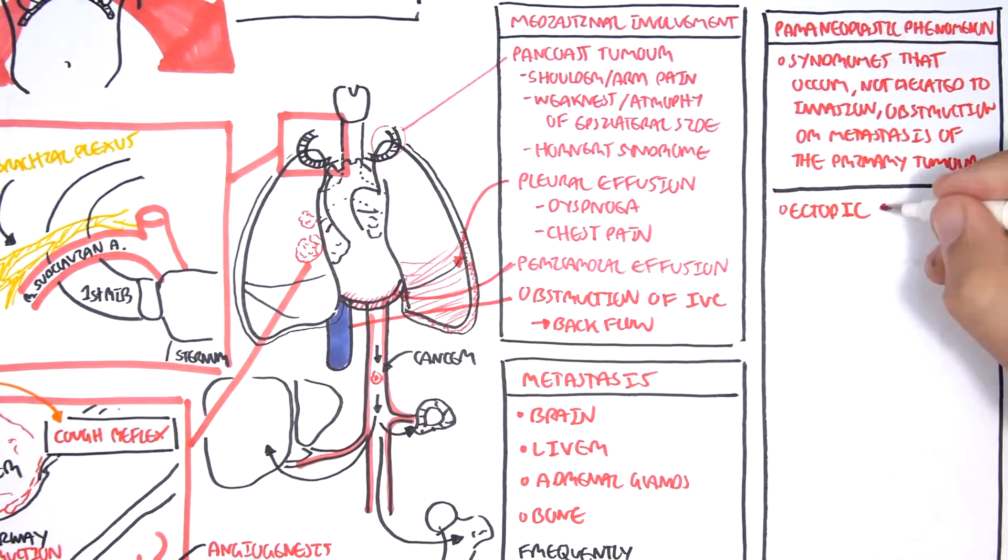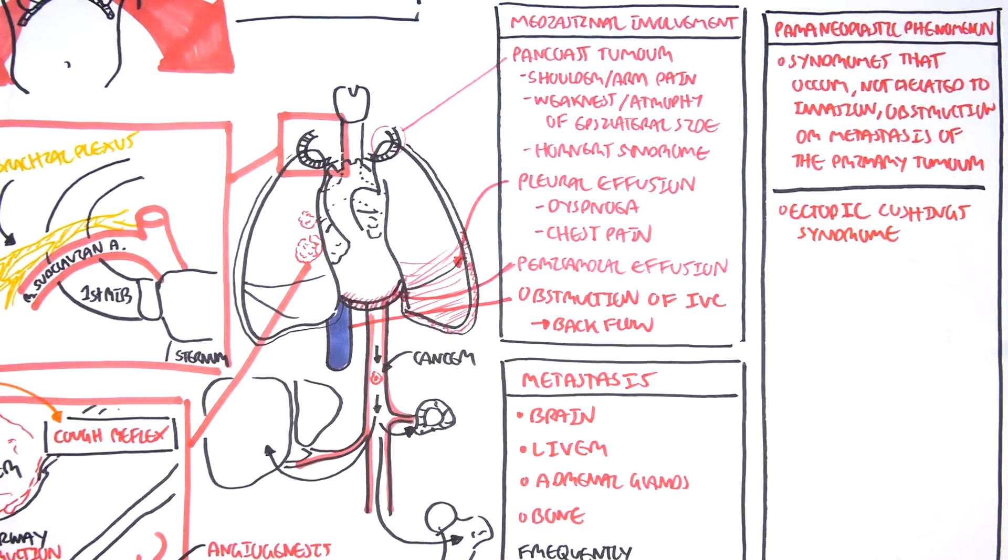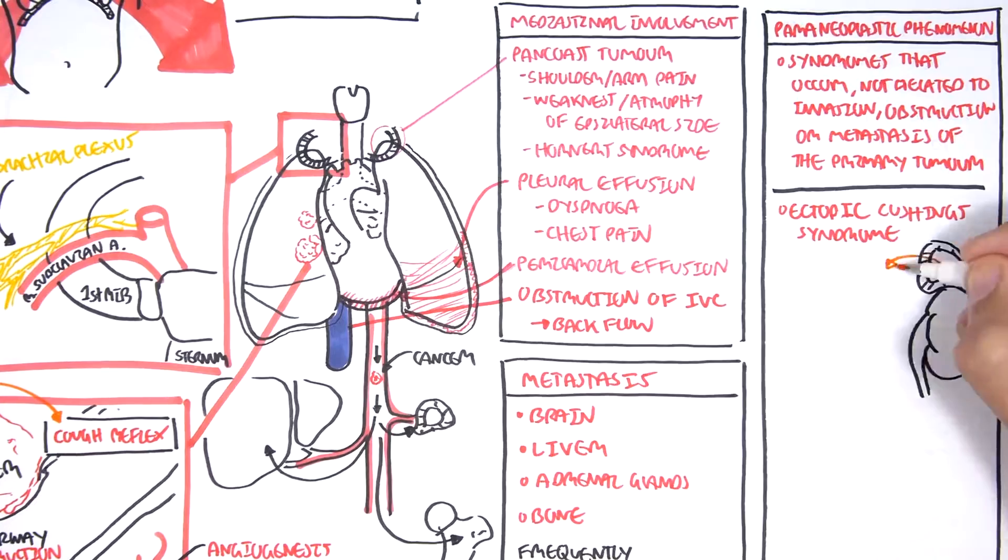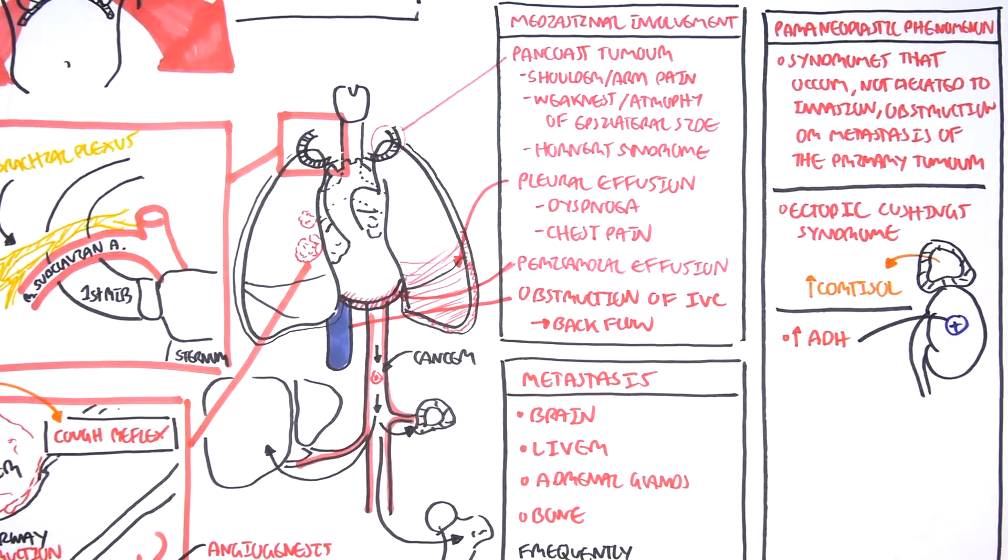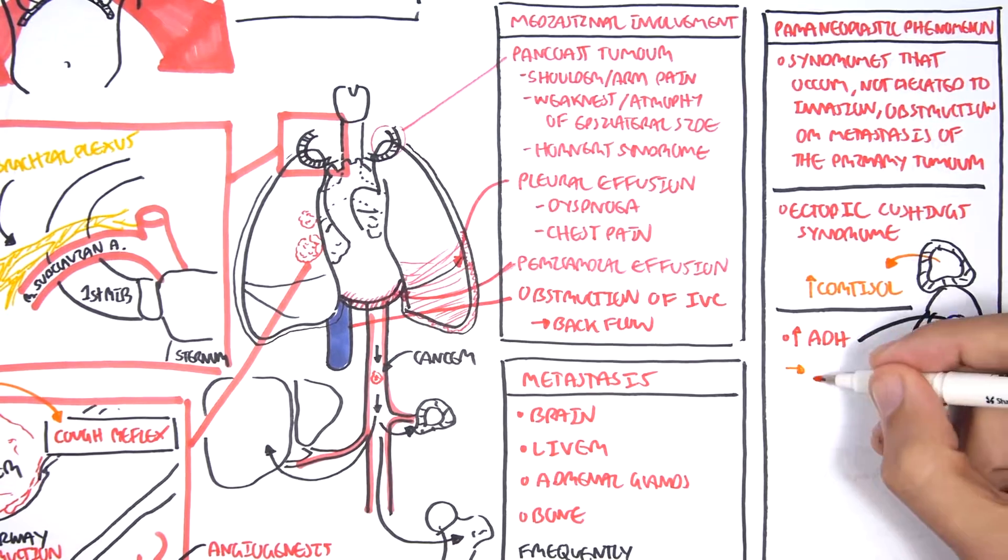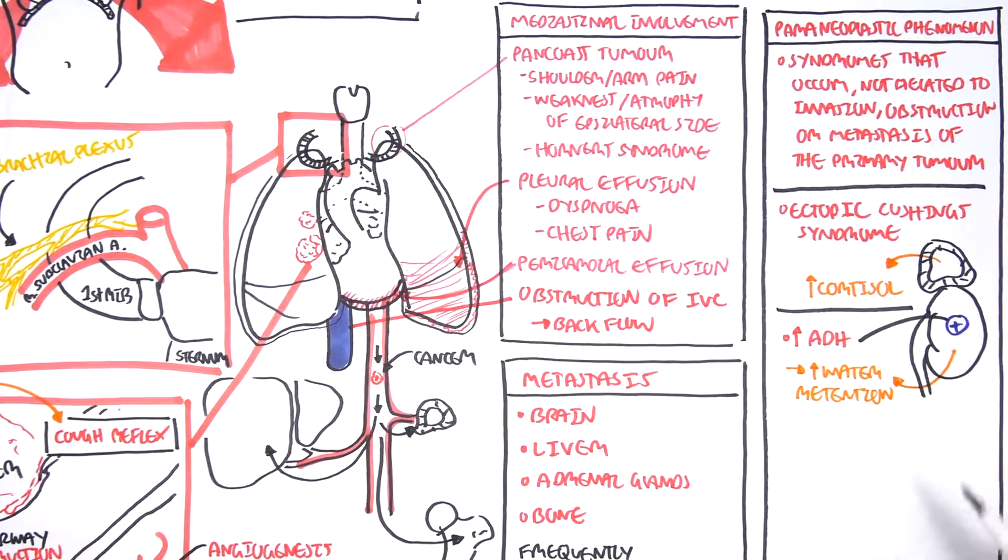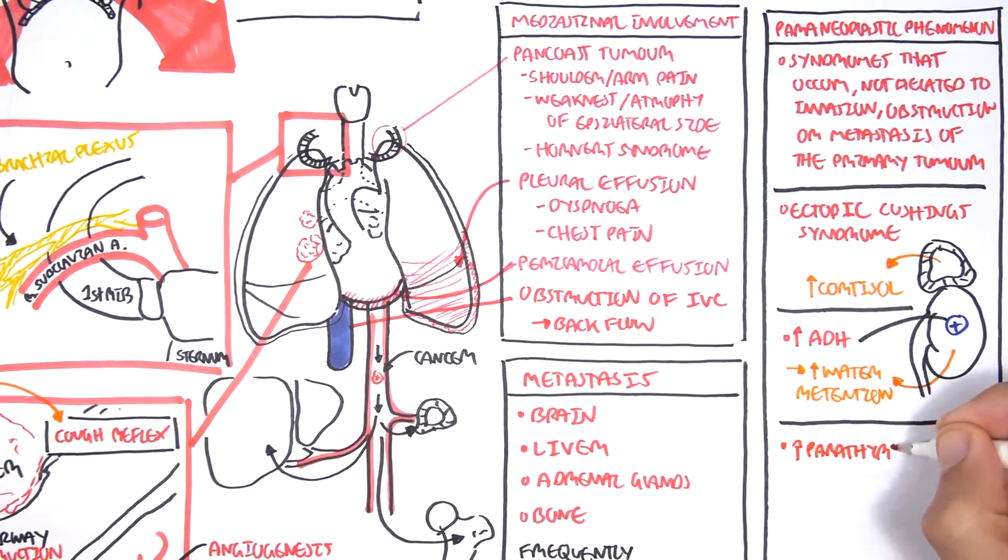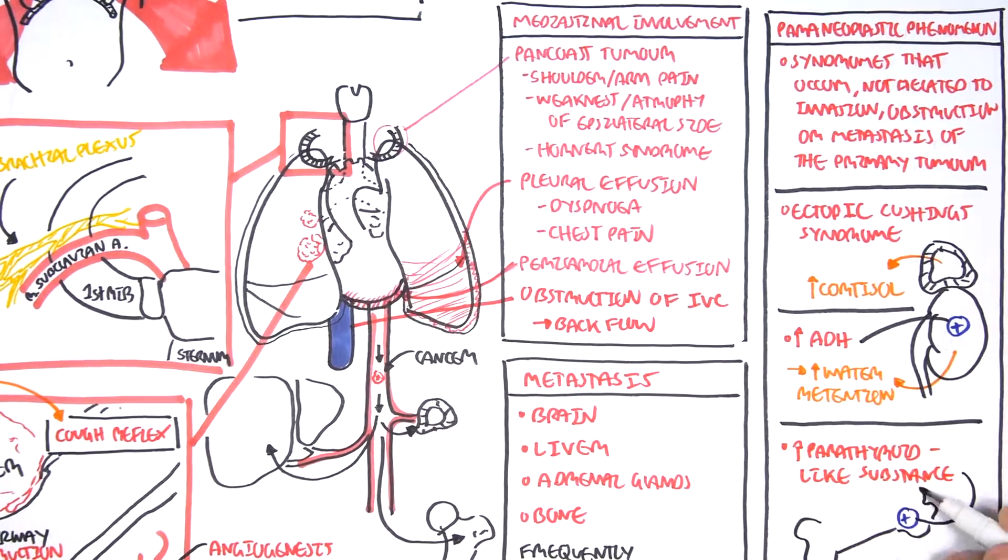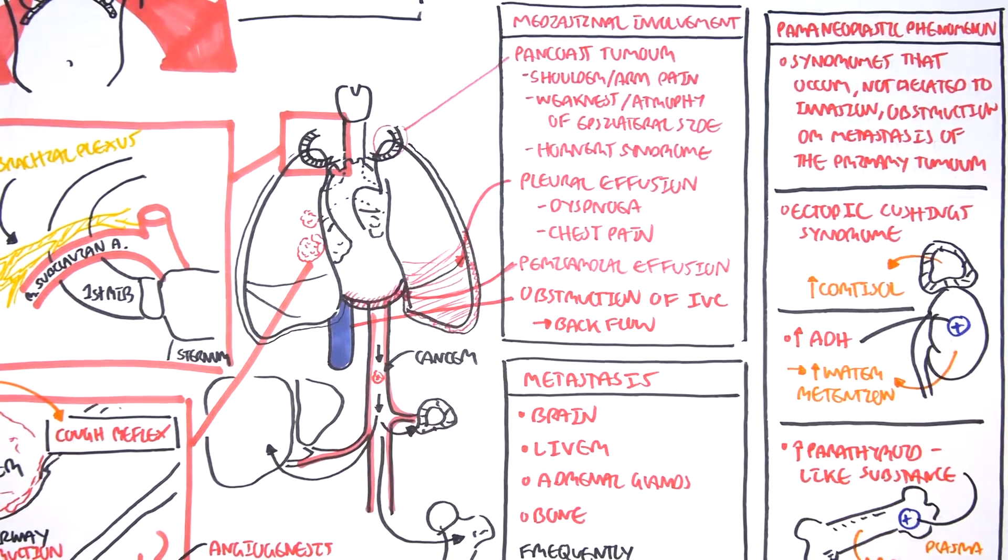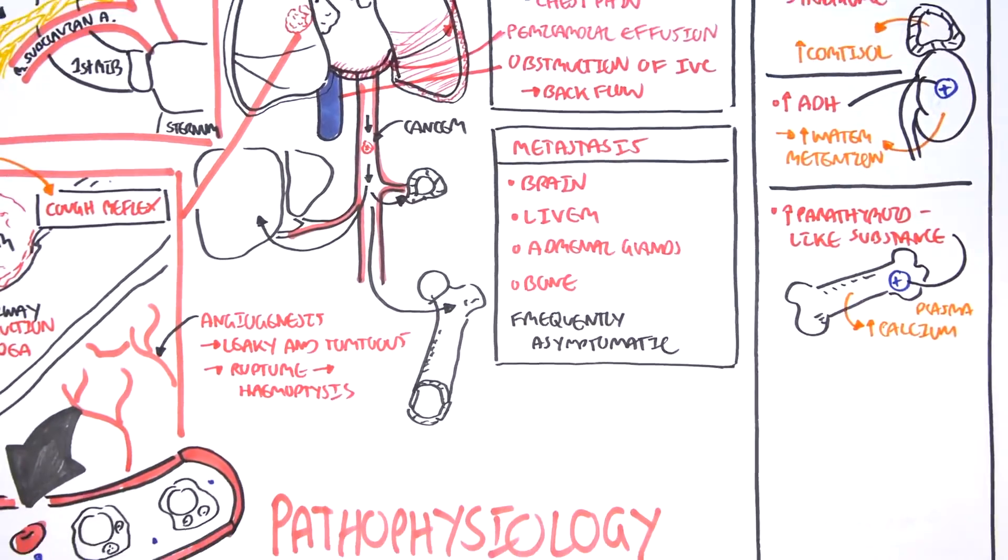The paraneoplastic syndrome include the following: Ectopic Cushing syndrome, where the hormone released by cancer cells stimulate the adrenal glands to produce cortisol. We also have antidiuretic-like substance secreted by the neuroendocrine cells, which stimulate the kidneys to retain water. These neuroendocrine cells also produce a parathyroid hormone-like substance, which stimulates the bone to break down its minerals and release calcium into plasma, increasing blood calcium levels, resulting in hypercalcemia.